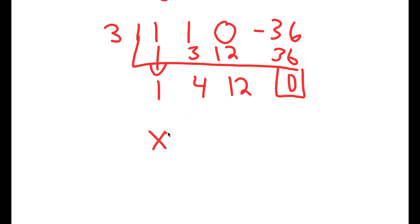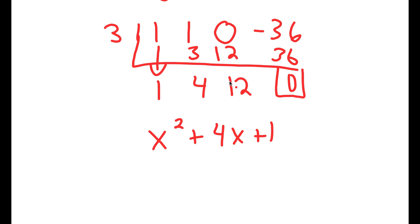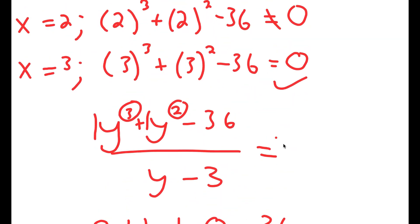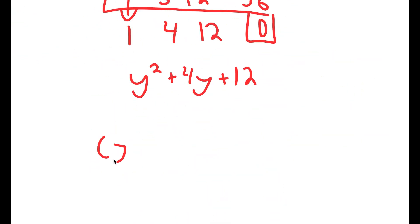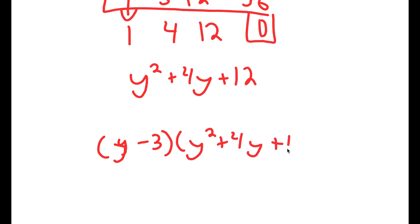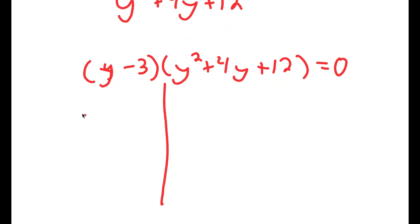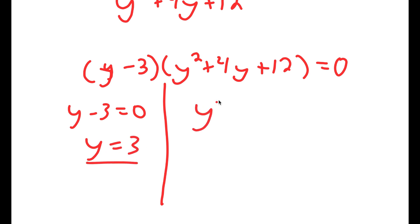So here I have y squared plus 4y plus 12, meaning that this is equal to y squared plus 4y plus 12. This means that y minus 3, times y squared plus 4y plus 12, is equal to 0. This gives me two equations: y minus 3 equals 0, meaning y equals 3, which we already know. And y squared plus 4y plus 12 equals 0.